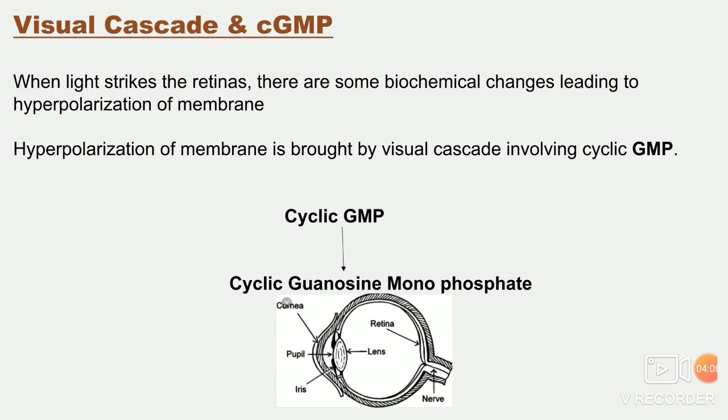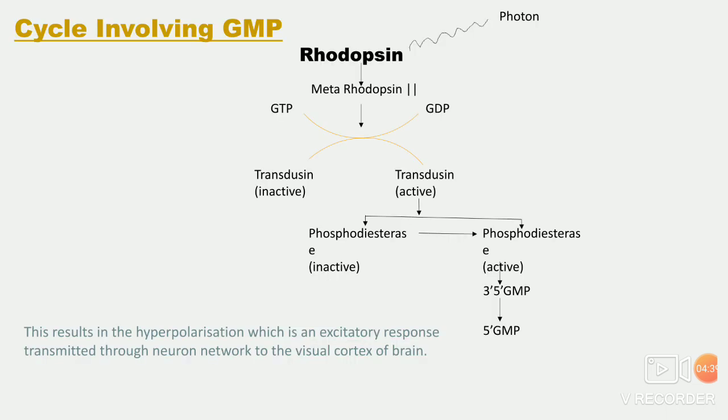Next we see what is the visual cascade and cyclic GMP. Cyclic GMP क्या है: cyclic guanosine monophosphate. जब light strike करती है आँखों पर, वहाँ biochemical changes होंगे, और इन biochemical changes की वजह से hyperpolarization होगा membrane का. Hyperpolarization of the membrane is brought about by the visual cascade involving cyclic GMP.